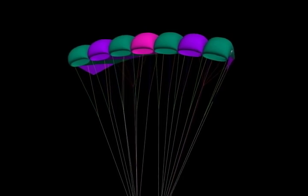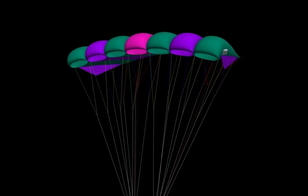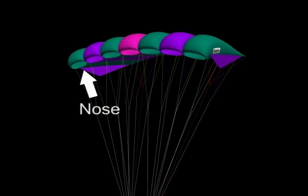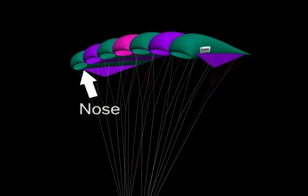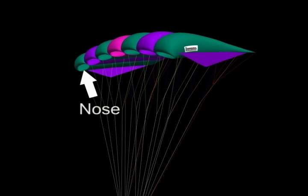Here you can see the 7 individual cells. We will start here with the nose of the parachute. The nose faces in the same direction as the jumper.